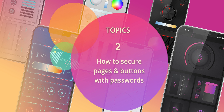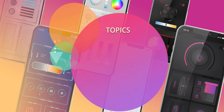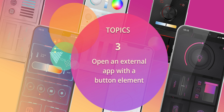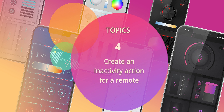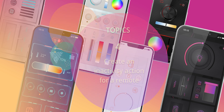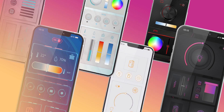My second tip is about securing pages and buttons with passwords. Then I will show you how to open an external app — for example the Sonos, Philips Hue, or Nanoleaf app — via a VisDesigner button. And finally, you will learn how to set up an inactivity action for a remote. Let's get started.